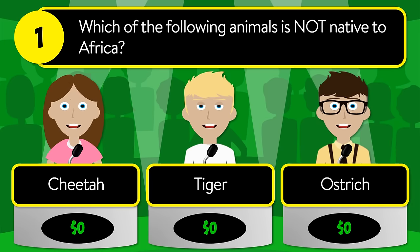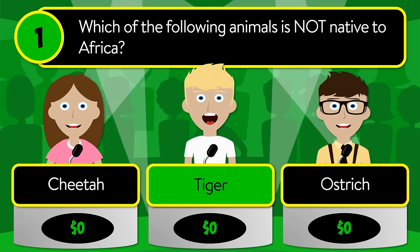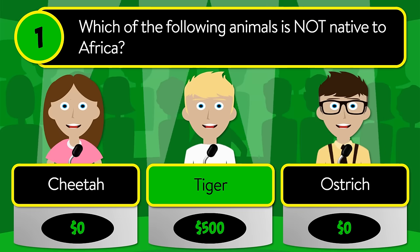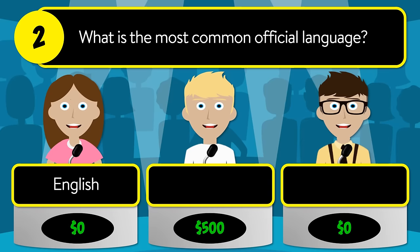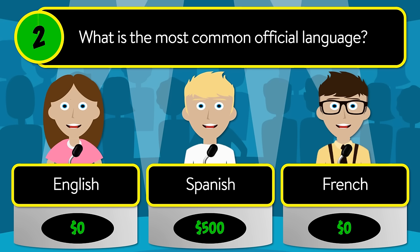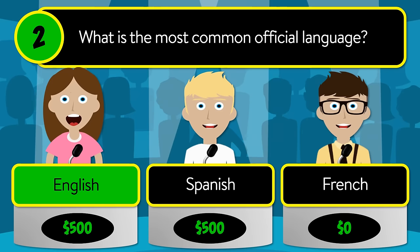tiger, or ostrich? The correct answer is tiger. Question number two: what is the most common official language? Is it English, Spanish, or French? The correct answer is English.